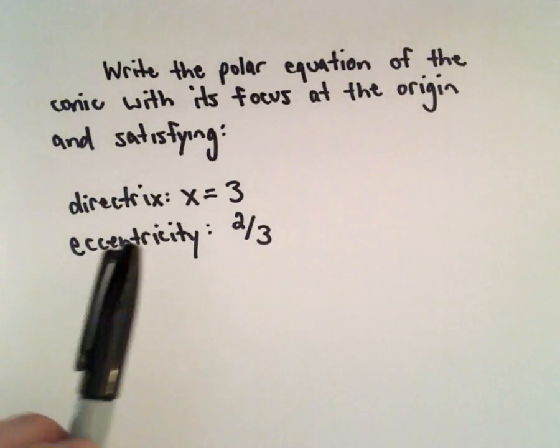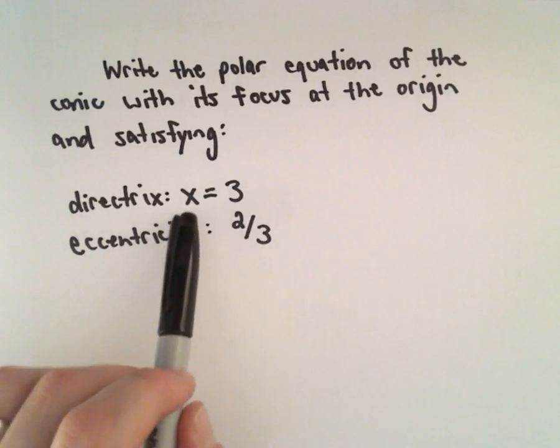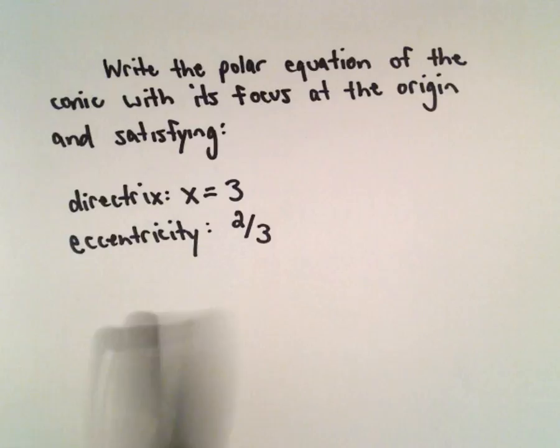Here we're going to write the polar equation of the conic with a focus at the origin and a directrix. The directrix is given by the line x equals 3 and the eccentricity equals 2/3.